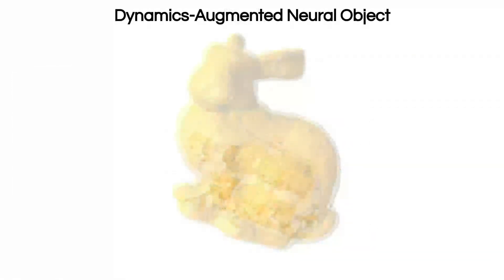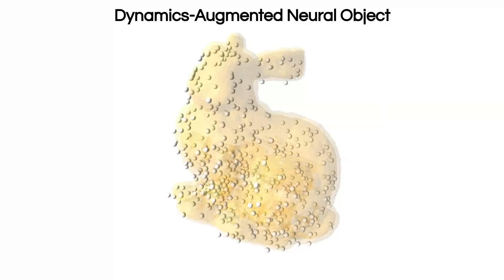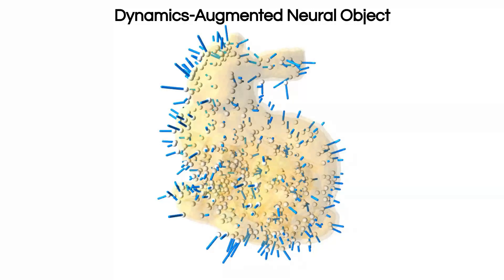The Dynamics Augmented Neural Object is obtained from a neural object model of the Stanford bunny. We sample points, white dots, from the neural density field. For each sample point, we compute the density field gradient, blue arrows, to obtain an approximate outward normal. It will be used to compute contact forces in our simulator.